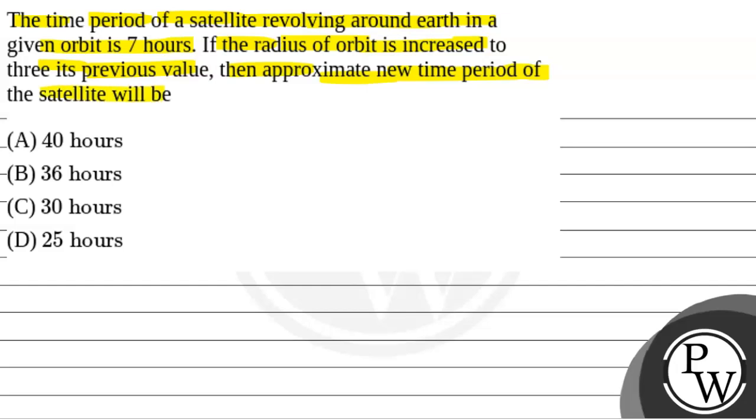So, we will solve this question. First of all, we will see what the key concept is to solve this question. The key concept will be Kepler's third law of motion, we have time period squared is directly proportional to cube of radius.